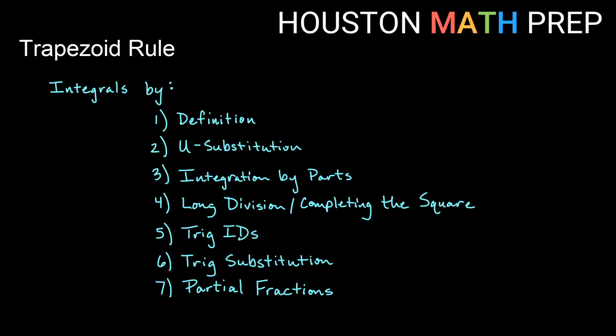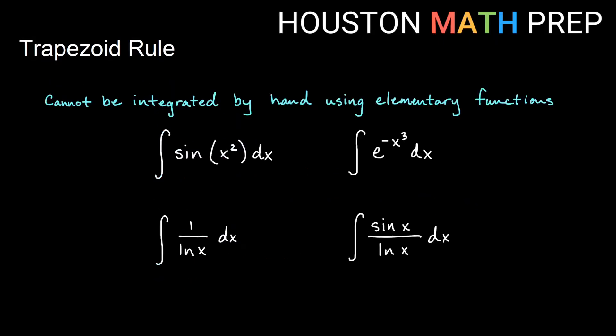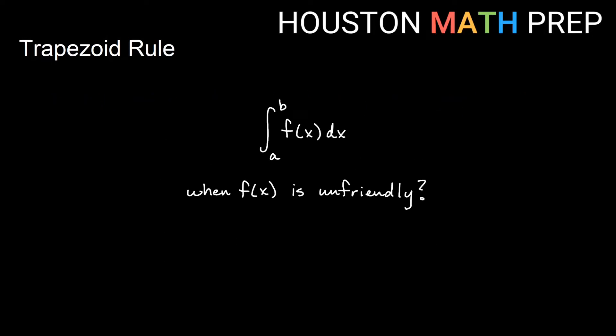There are a lot of ways to do them by hand. Unfortunately, even with all the ways that we know, not everything that we see as an integral can be integrated by hand using any functions that we've probably seen in mathematics up till this point. These are very simple looking integrals that don't look super complicated, but these cannot actually be integrated using elementary functions by hand. So the question is, what do we do when finding our area under the curve is very unfriendly?